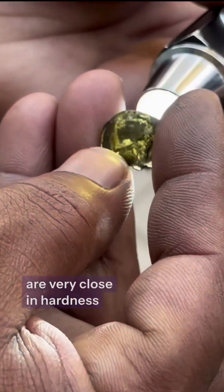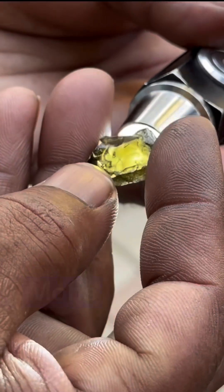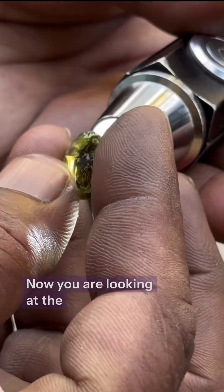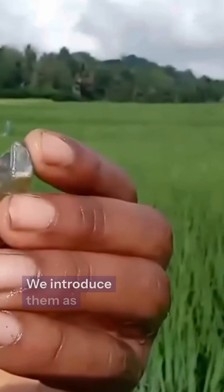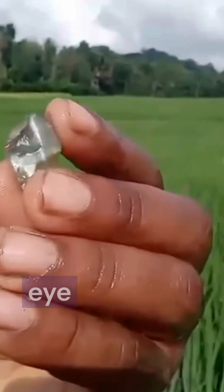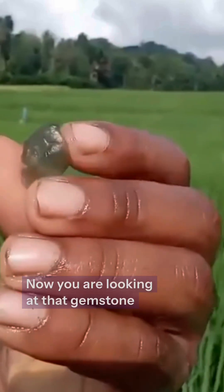Now you are looking at the rough kornerupine gemstone. Some kornerupine gemstones show asterism effect. We introduce them as kornerupine cat's eye. Now you are looking at that gemstone.